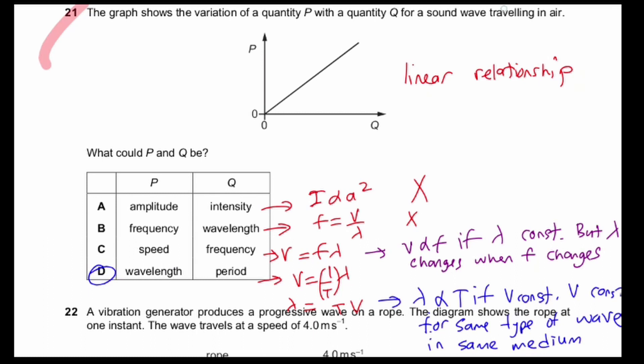For question 21, you need to find which relationship will give you a straight line. You need to notice that it must be a linear relationship. So let's try trial and error. For A, the relationship between intensity and amplitude is intensity is proportional to amplitude squared.